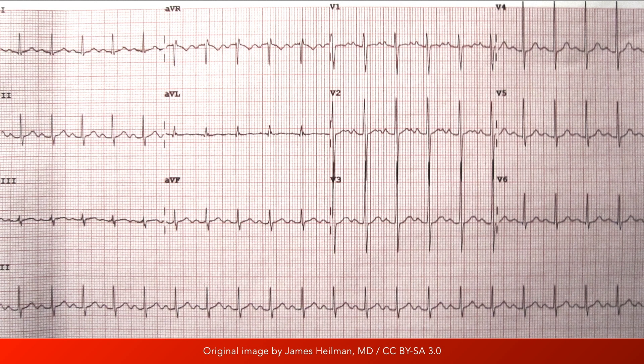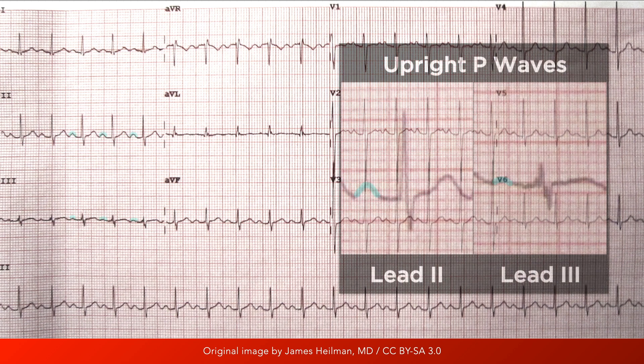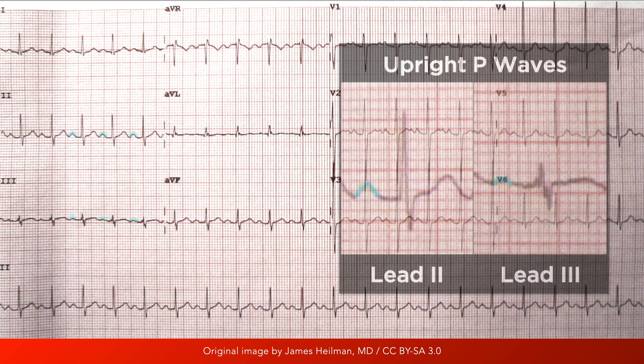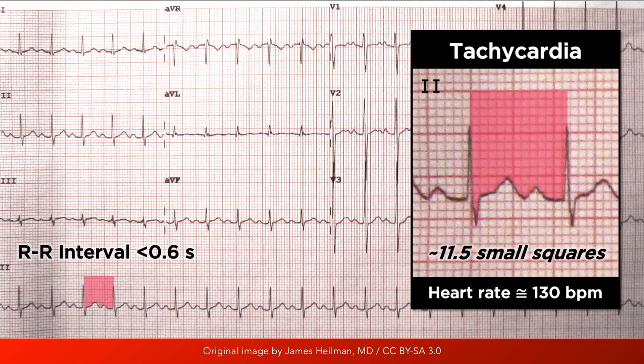The ECG characteristics of sinus tachycardia are essentially the same as sinus rhythm, but at a faster heart rate. An upright P wave of constant morphology precedes every QRS complex, and a QRS complex follows every single P wave. The heart rate in a patient with sinus tachycardia is greater than 100 beats per minute, which correlates with an RR interval of less than 0.6 seconds. And finally, the rhythm is regular — that is, the RR intervals remain constant.